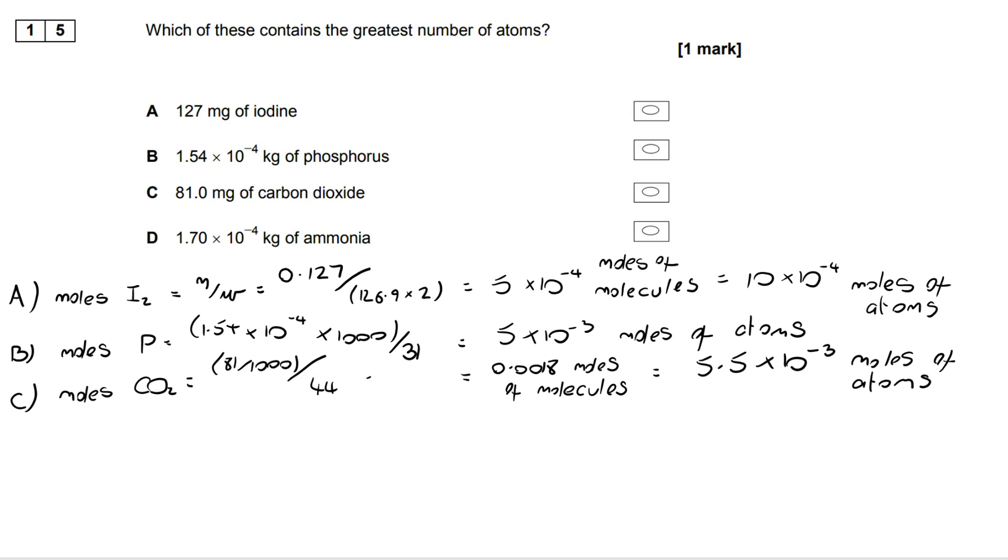For carbon dioxide, we've got 81 milligrams, so we multiply that by 1000, divide by the MR, 44, we get the number of molecules, but then we've got to multiply that by 3 because carbon dioxide contains 3 atoms, 1 carbon and 2 oxygens.